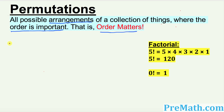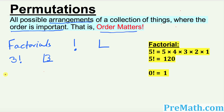So next we will be talking about factorials. Factorials are always denoted by exclamation sign or by just this kind of box. Let me give you an example: 3 factorial could be represented by this one or simply 3 with this box. Now, if I say find the value of 3 factorial, that's going to be simply 3 times 2 times 1, which is going to be 6. So 3 factorial is 6.